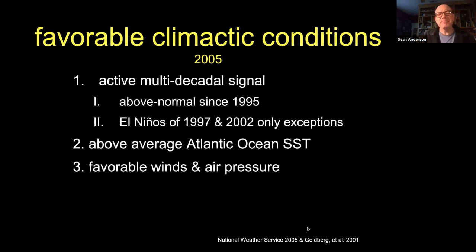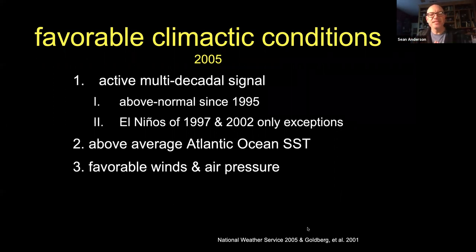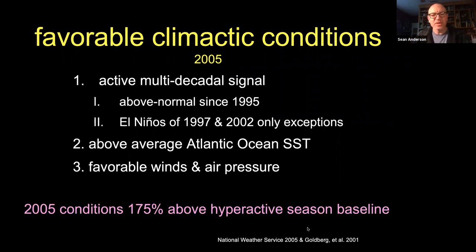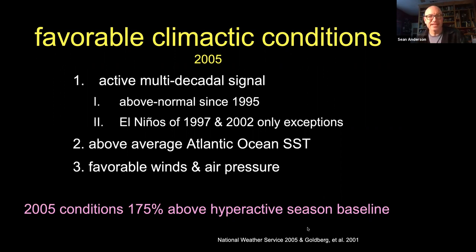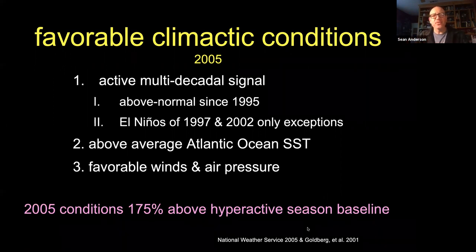We also had above-average Atlantic sea surface temperatures — the ocean surface, especially in the Gulf region, was warmer than a typical year on average. And third, favorable winds and air pressure were all aligned. This led to conditions predicted to be 175 percent above the so-called hyperactive seasonal baseline. Two key entities — the National Hurricane Center and the National Center for Atmospheric Research in Colorado — issue hurricane predictions every year.